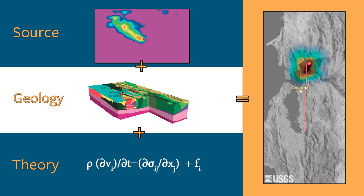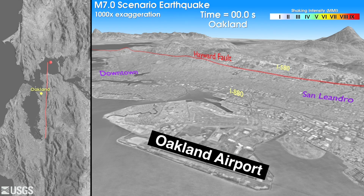Once we have an educated understanding of these parameters, we form a model and run it through a supercomputer. Let's look at one of these simulations, which the U.S. Geological Survey prepared for a magnitude 7 earthquake on the Hayward Fault.